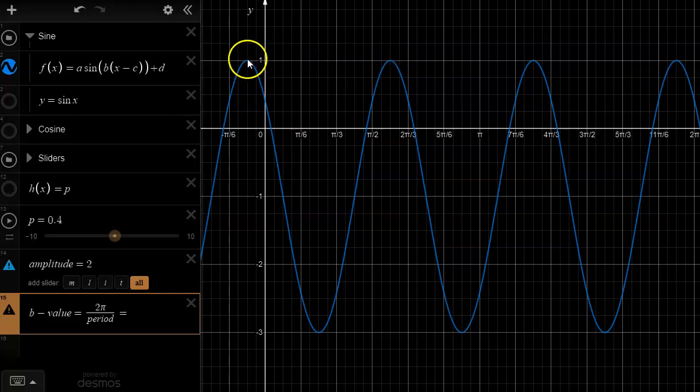16 of these little grid increments. I can see that every 4 squares is pi over 6. So 4, 8, 12, 16 takes me to 2 pi over 3, which means that must be the period.